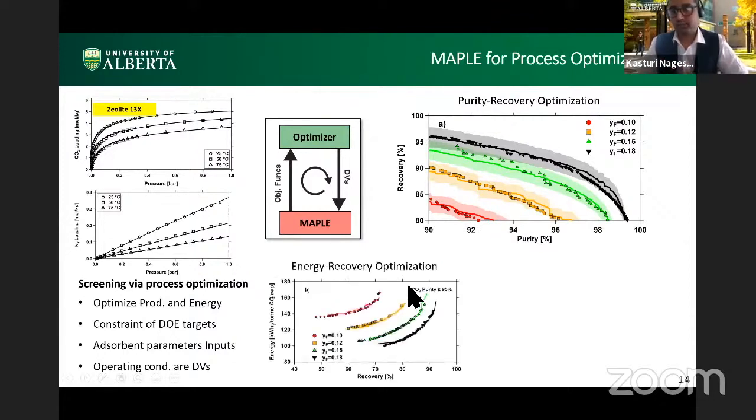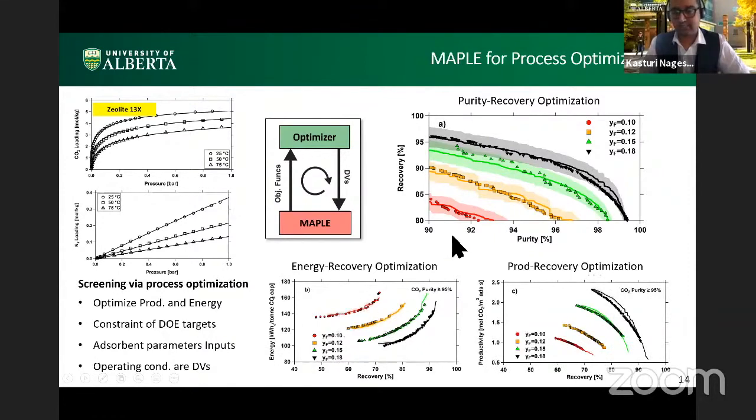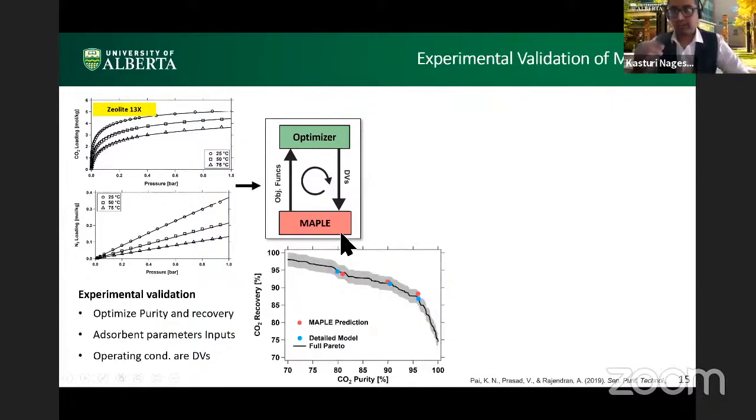And now we can do the same with a constraint of CO2 purity, which is something that is needed when you're designing a CO2 capture plants, which is to capture the CO2 at high purity of 95, 96%. And the same can be done for productivity recovery optimizations. Here I've shown you the exact same plots for different feed compositions here. What you should notice is as we increase the feed composition, the separation becomes easier to perform, which again is an intuitive result, but it's very interesting to see that both the machine learn MAPLE model, as well as the detailed model, show us the same results. Now, a very important thing to do when we are designing models, especially data-driven models is to validate them with experiments. So this is what we did here.